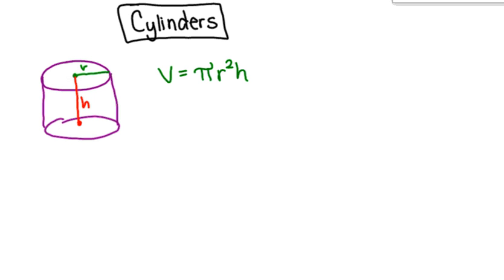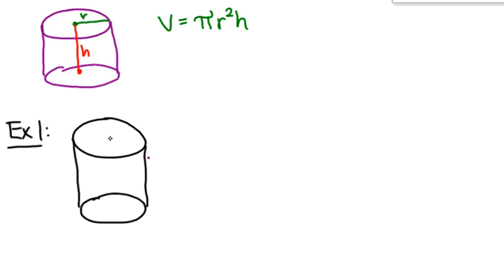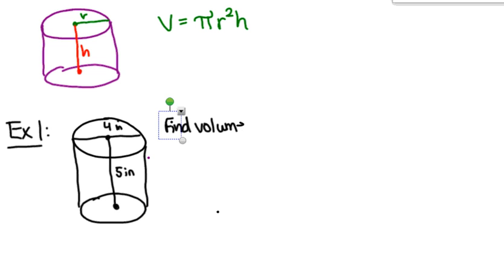In example one, we start with a cylinder that has a diameter of four inches and a height of five inches. They want us to find the volume in terms of pi. It's important to notice those words — 'in terms of pi' means that when we are done, there will be a pi in our answer.